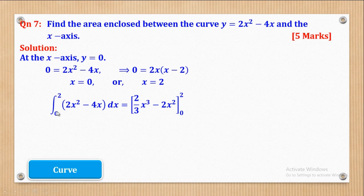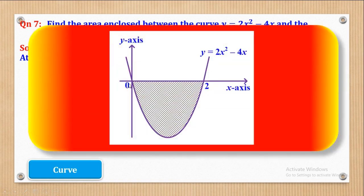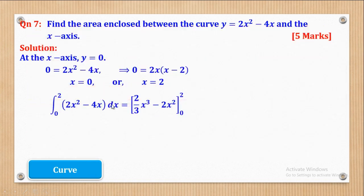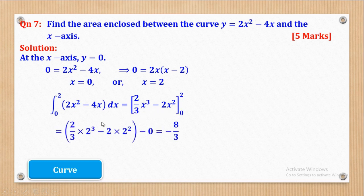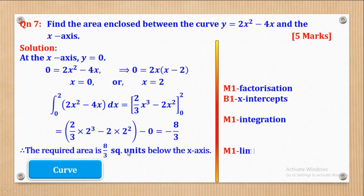The area is given by the integral from 0 to 2 of (2x² − 4x) dx. Integrating gives [2x³/3 − 2x²] from 0 to 2. Substituting the upper limit: 2(8)/3 − 2(4) = 16/3 − 8. Substituting the lower limit gives 0. Simplifying gives −8/3. This means the required area is 8/3 square units below the x-axis. It is below because of the negative value — if the value were positive, the area would be above the x-axis.